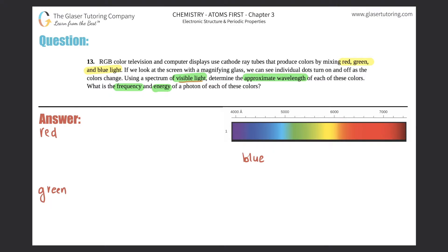The only problem is that the spectrum uses angstroms — you see the 'Å' symbol with a little halo at the top. Normally wavelengths are in nanometers or meters. So first let's just get the numbers for red, green, and blue in angstroms and then convert to nanometers or meters.